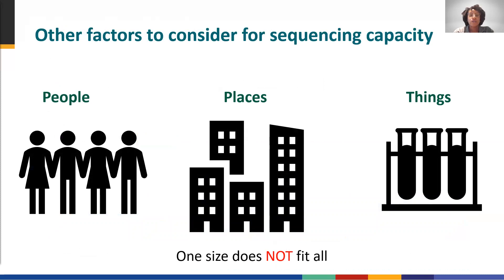In addition to motivation and technical considerations, there are a few more overarching themes to consider when onboarding sequencing in your laboratory for SARS-CoV-2. Let's break this down into people, places, and things. People refers to a trained workforce for wet lab and dry lab components; places refers to laboratory space to house sequencing instruments; and things refers to reagents, tips, pipettes, and computing infrastructure for the dry lab.